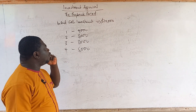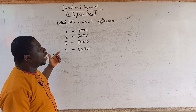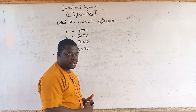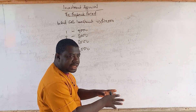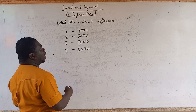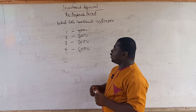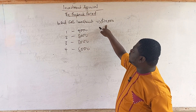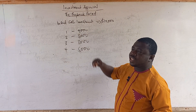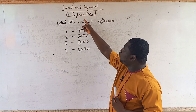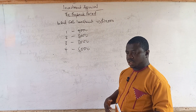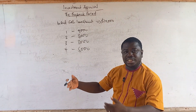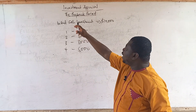The payback period looks at how long it will take for the initial cash outflow to be paid back to the company. In year one, if you are getting a net positive cash flow of $4,000, meaning that out of this $10,000, $4,000 has been paid back to you — that is what we call the payback period. How long will it take for the money you put into the project to be paid back to you?